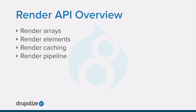Now that you know why the render API exists, here are the things we're going to cover, listed roughly in the order you're likely to need to learn them. Render arrays are the core structure of the render API — structured arrays used to define content and hints as to how that content should be rendered. Render elements are prepackaged render arrays, allowing for a sort of shorthand for describing similar types of data. Render caching: render arrays contain data about each element that allows the complex process of rendering an array to HTML to be cached, while ensuring proper cache invalidation whenever that content changes. And finally, the complete render pipeline — the process that Drupal goes through to convert an incoming HTTP request into a render array, then render that array to HTML via a renderer, and finally return a response to the requesting browser.